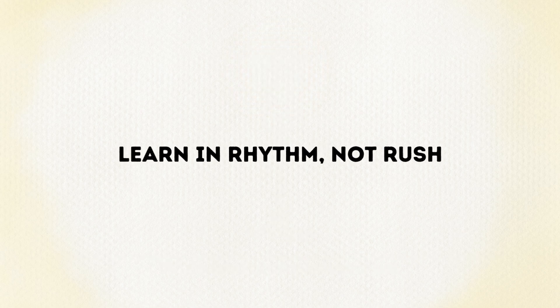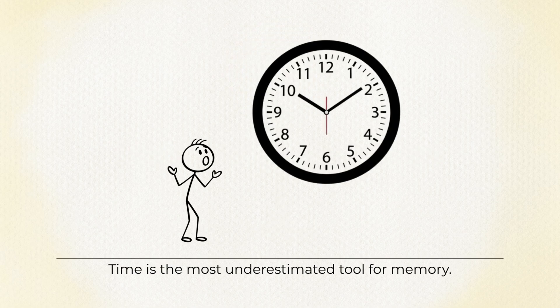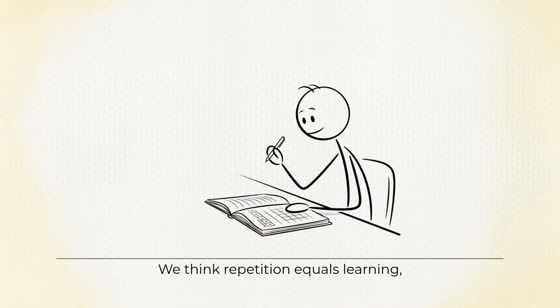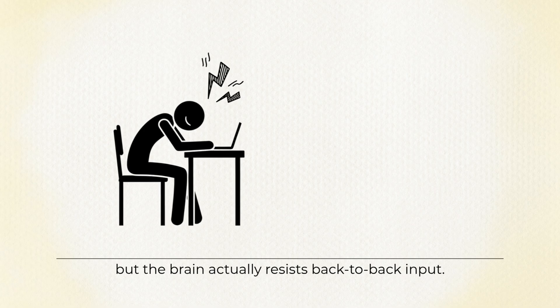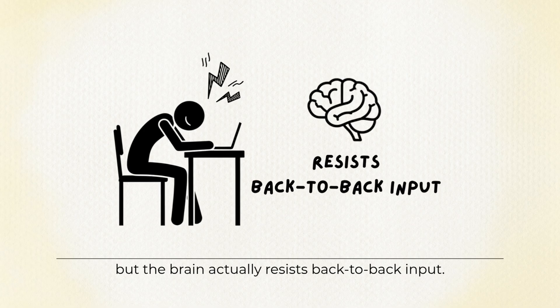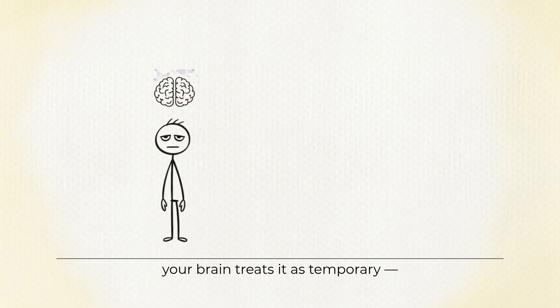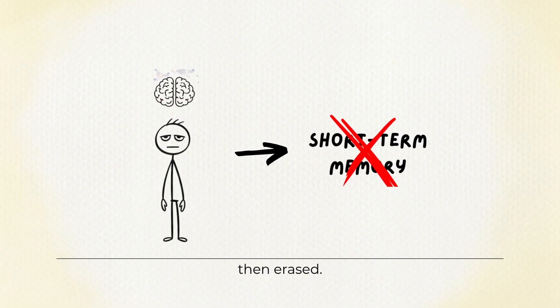Learn in rhythm, not rush. Time is the most underestimated tool for memory. We think repetition equals learning, but the brain actually resists back-to-back input. When you cram in one sitting, your brain treats it as temporary, stored briefly, then erased.